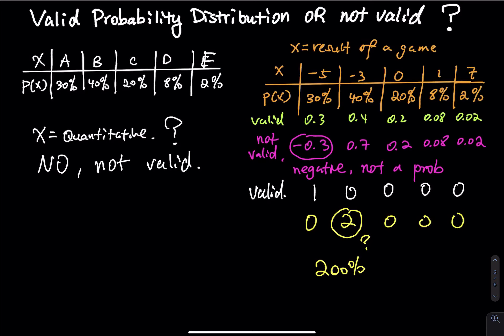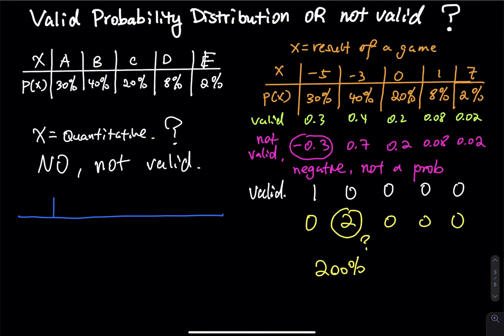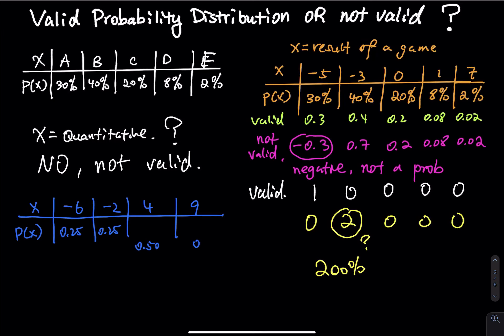Here is one more example. Suppose x has distinct values: negative two, four, and nine, and two of the four probabilities are given as 0.25 and 0.25. Can you find the missing probabilities? You still have 50% left, but there are two empty slots. There is more than one right answer — you could do 0.5 and 0, or 0.4 and 0.1, or 0.2 and 0.3 — as long as they add up to 1, are not negative, and are not more than 1.